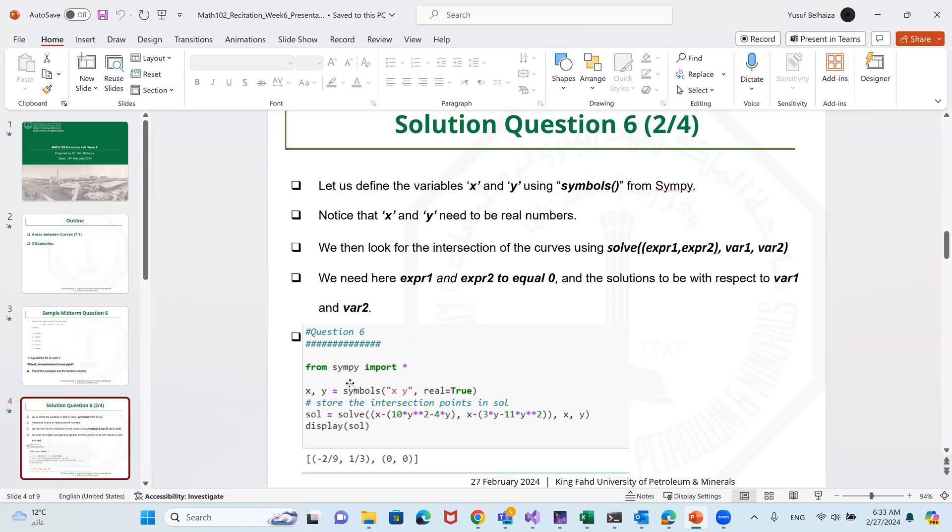Here is a screenshot from the iPython file, the definition of the variables and the solutions to this equation, where we have the first function x minus 10y squared minus 1y should be equal to x minus 3y minus 11y squared, with respect to x and y. And the solutions will be solved in this list and will display in the list. Here you see you have two points of intersection, the point of coordinates minus 2 over 9, 1 over 3, and of course the points here.